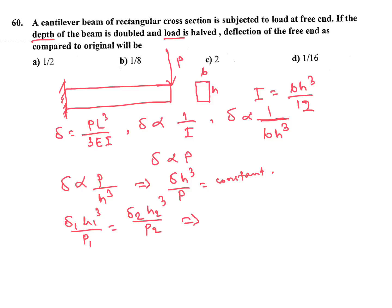So delta 2 equals delta 1 into P2 by P1 into H1 cubed by H2 cubed. Now depth is doubled, so H2 equals 2H1, and load is halved, P2 equals P1 by 2.